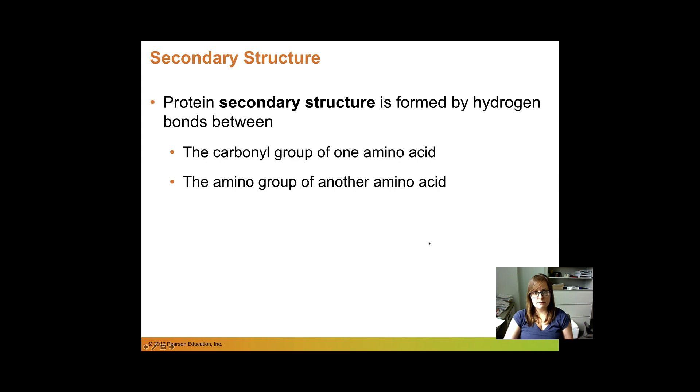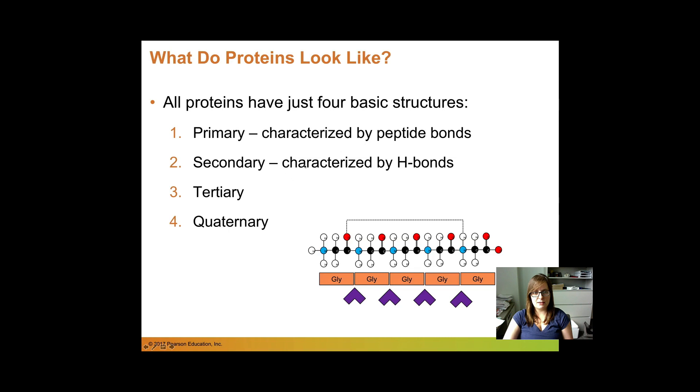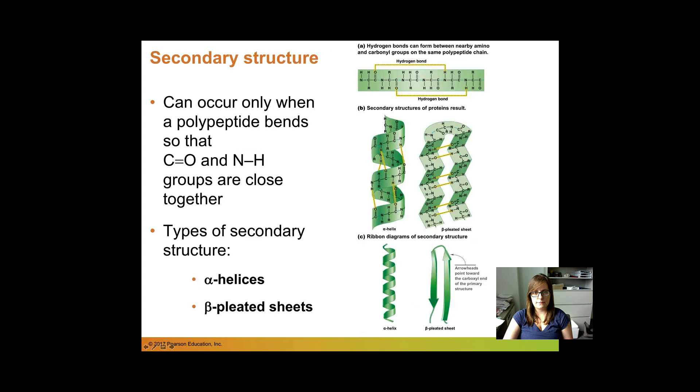Secondary structure is formed by hydrogen bonds between the backbones of different amino acids. So it's the carbonyl of one amino acid and the amino group of another one. So here's what that looks like. It's characterized by hydrogen bonds to the backbone. So our carboxyl group of one amino acid and an amino group of another one. And that's just shown again here.